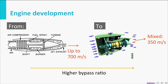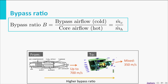The technical word for this development is what we call a higher bypass ratio. The bypass ratio is the ratio between the cold air that passes by the actual jet engine, divided by the core airflow — the hot air. M dot C stands for cold, M dot H stands for hot. This bypass ratio is not a fraction of one, but much larger than one.